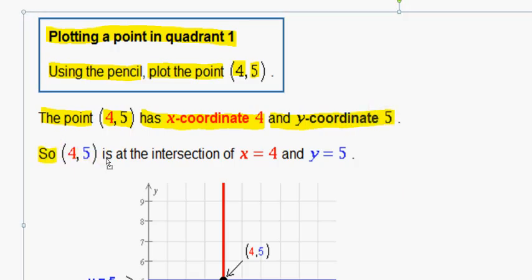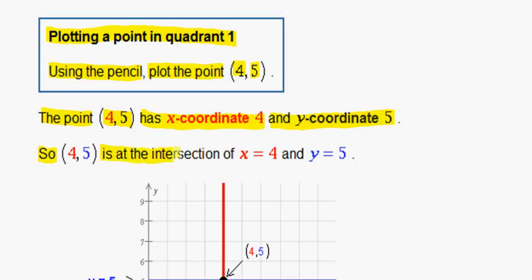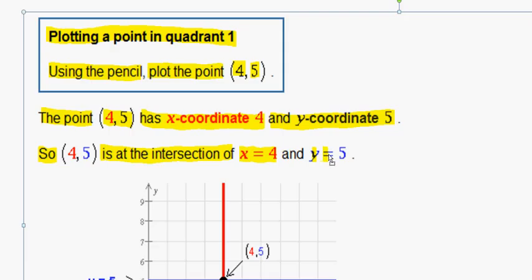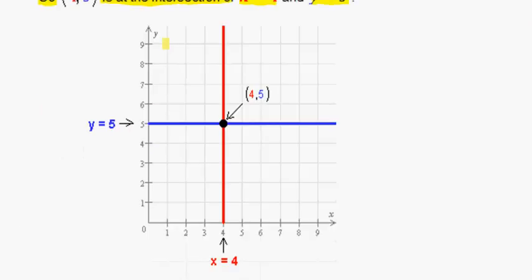So (4,5) is at the intersection of x equals 4 and y equals 5. So on the y-axis we go up 1, 2, 3, 4, 5 and we go across.